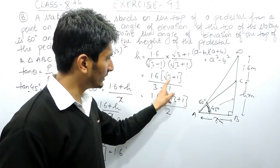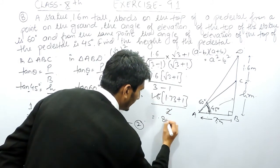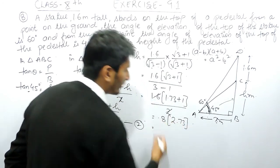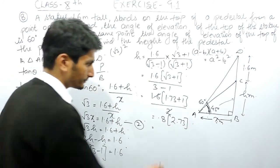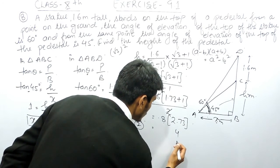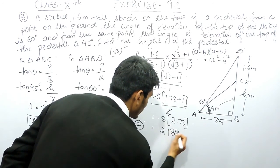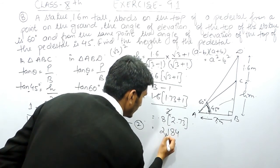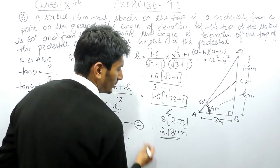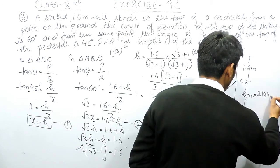Since 3 − 1 = 2 and the value of √3 is 1.73, we can simplify. The 1.6 divided by 2 gives 0.8, so this becomes 0.8 × 2.73. Multiplying these two values: 0.8 × 2.73 = 2.184. Counting three decimal places from the right, the height of the pedestal equals 2.184 meters.